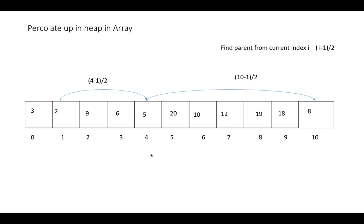After that, we again need to find out whether 2 has reached its right position. We find its parent at index (1-1)/2, which is index 0, giving value 3. Since 3 is greater than 2, we need to swap it again. After this final swap, we can see the array is now satisfying the min heap property. The process of taking the last element 2 and finding its correct position in the array is called the percolate up operation.